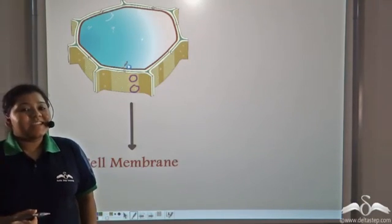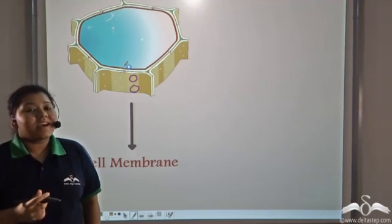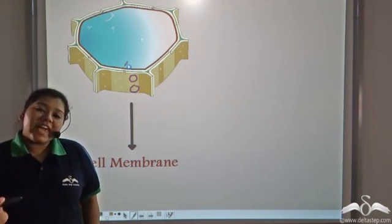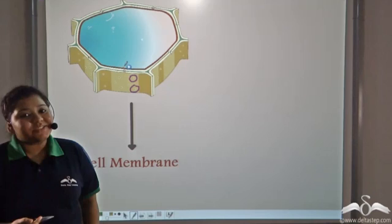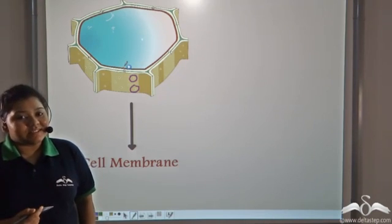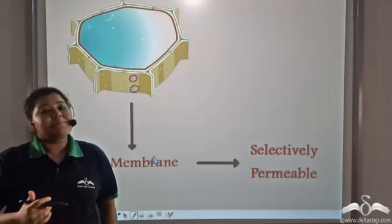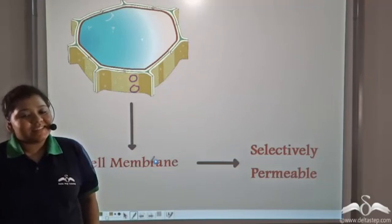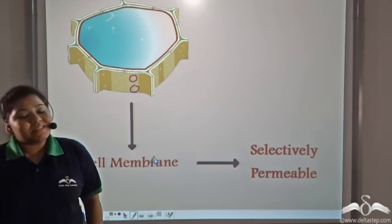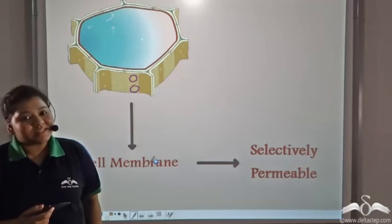The cell membrane acts like the guards at the gate who were asked to check on every person trying to enter into the city or leave the city. So the cell membrane is a selectively permeable membrane that allows only specific molecules to pass through it.